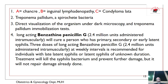Diagnosis is done by direct visualization of the organism under dark-field microscopy and the Treponema pallidum mobilization test. Long-acting benzathine penicillin G 2.4 million units administered intramuscularly will cure a person with primary, secondary, and early latent syphilis. Three doses of benzathine penicillin G 2.4 million units administered intramuscularly at weekly intervals is recommended for late latent syphilis or latent syphilis of unknown duration.